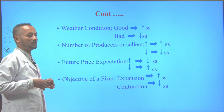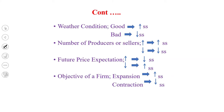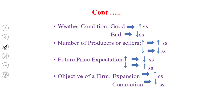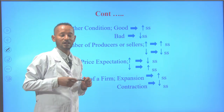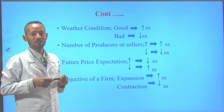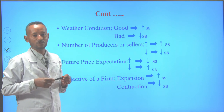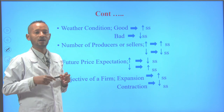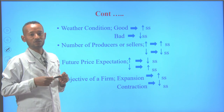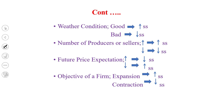Future price expectation is another determinant. If firms expect higher prices in the near future, then the supply of a commodity will decline. And if firms expect lower future prices, then the supply of a commodity will increase. The objective of the firm is also a determinant. If the firm's objective is expansionary, then the supply will increase and the supply curve shifts to the right. And if the firm's objective is contractionary, then supply will decline and the supply curve shifts to the left.